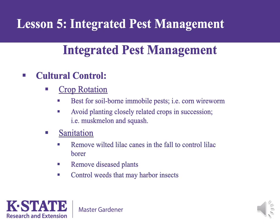Sanitation can also play an important role in preventing pest buildup. The lilac borer overwinters inside wilted lilac canes, so removing and destroying these canes before spring can help control the insect. Removal of heavily diseased plants may help prevent disease from spreading. Additionally, squash bug populations can be minimized by tilling squash plants under at the end of the season and by controlling weeds near the garden that allow the pest to overwinter.